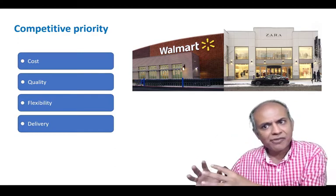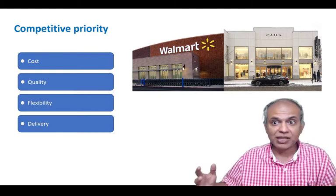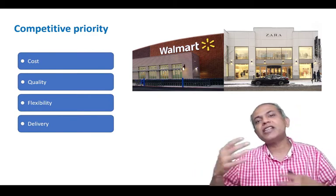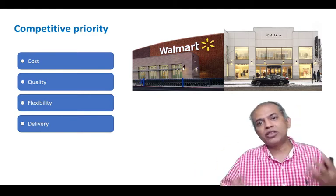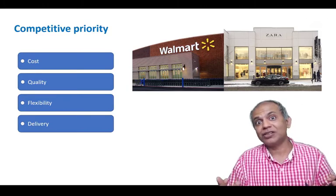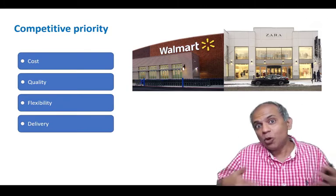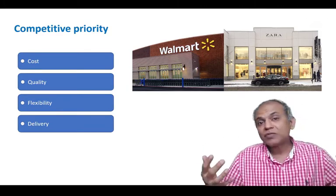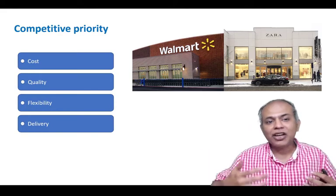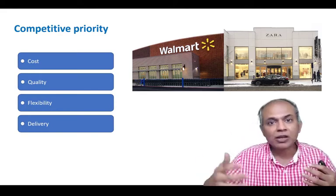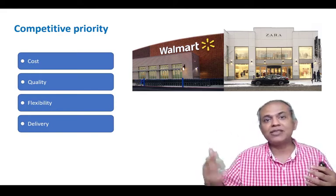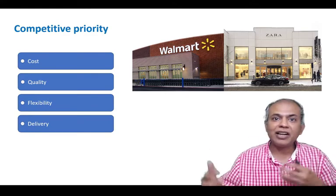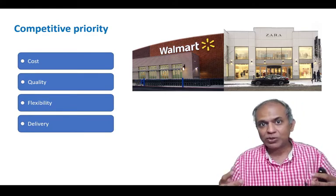At the other end, we have Zara, which sells apparels. Zara is known to change its apparels within its store more than eight times a year — some say 10 seasons a year. What they are trying to do is compete on the basis of flexibility, changing the kinds of products available to customers.